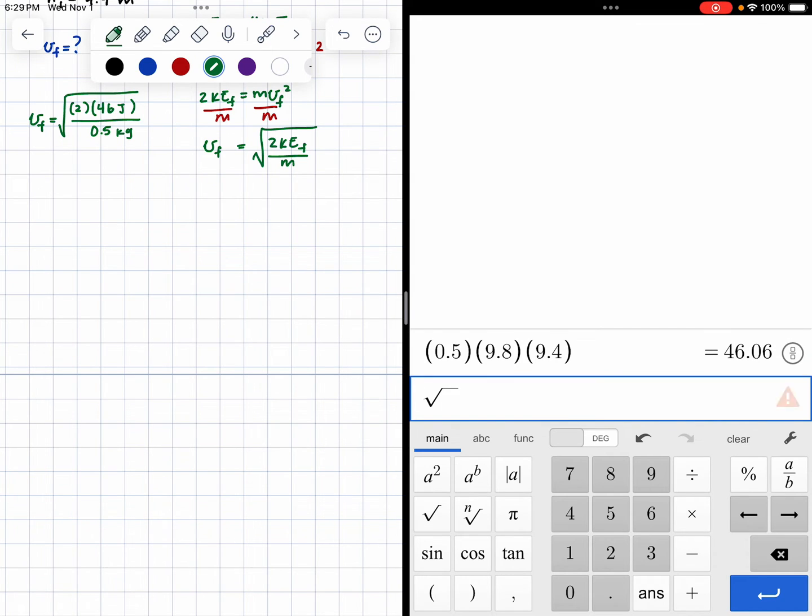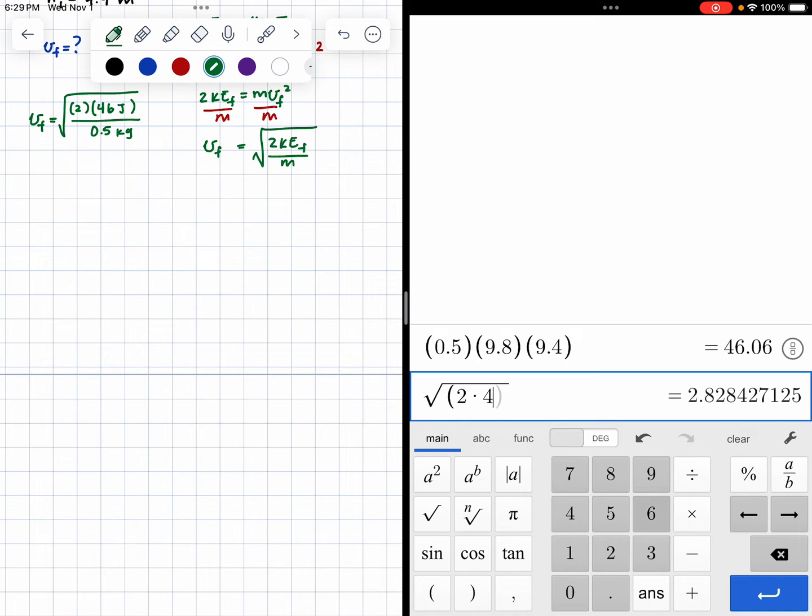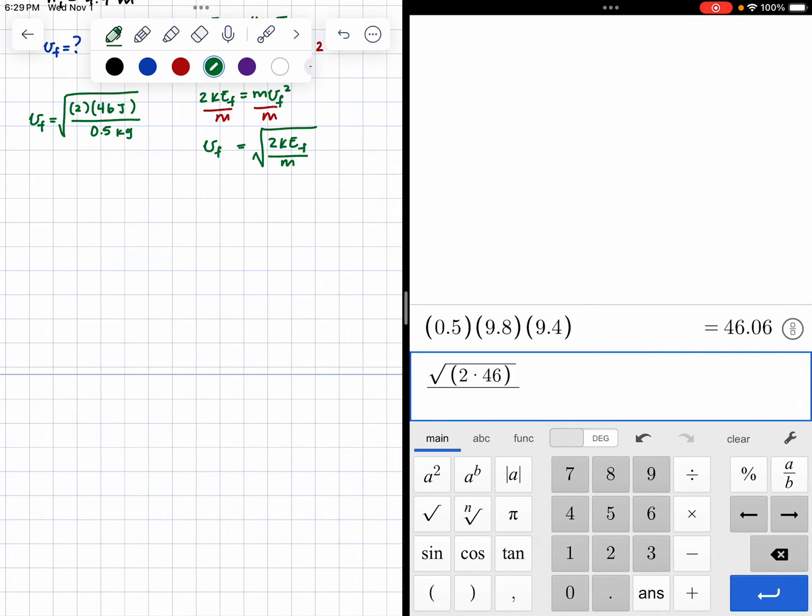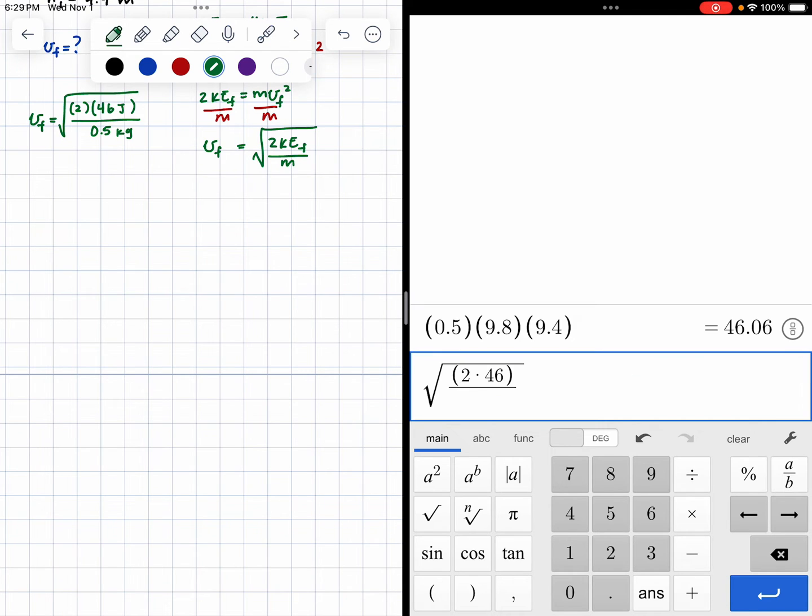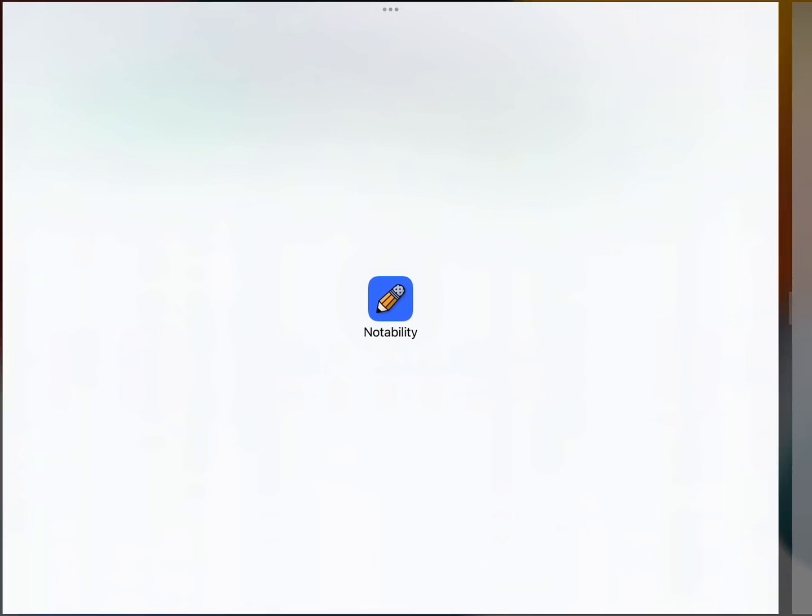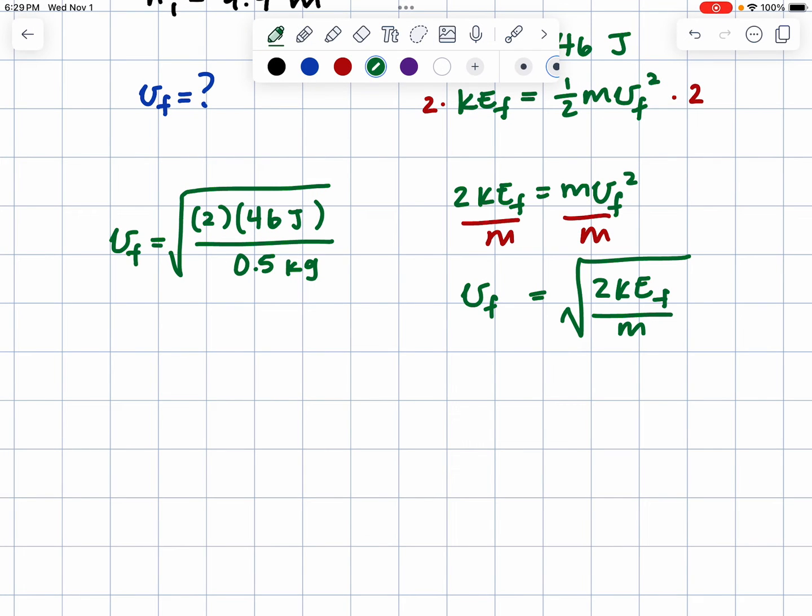So we have square root of 2 times 46 divided by, the division has to be inside the square root. So the final velocity is 13.56 meters per second.